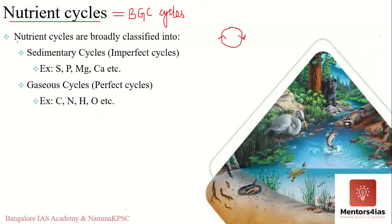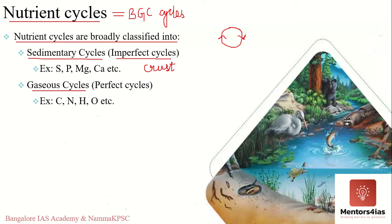Nutrient cycles are of two types: sedimentary cycles and gaseous cycles. In the sedimentary cycle, the reservoir of nutrients is the earth's crust. Sedimentary cycles are known as imperfect cycles because some nutrients get locked away into sediments and become unavailable for immediate cycling. Examples include sulfur, phosphorus, magnesium, and calcium.